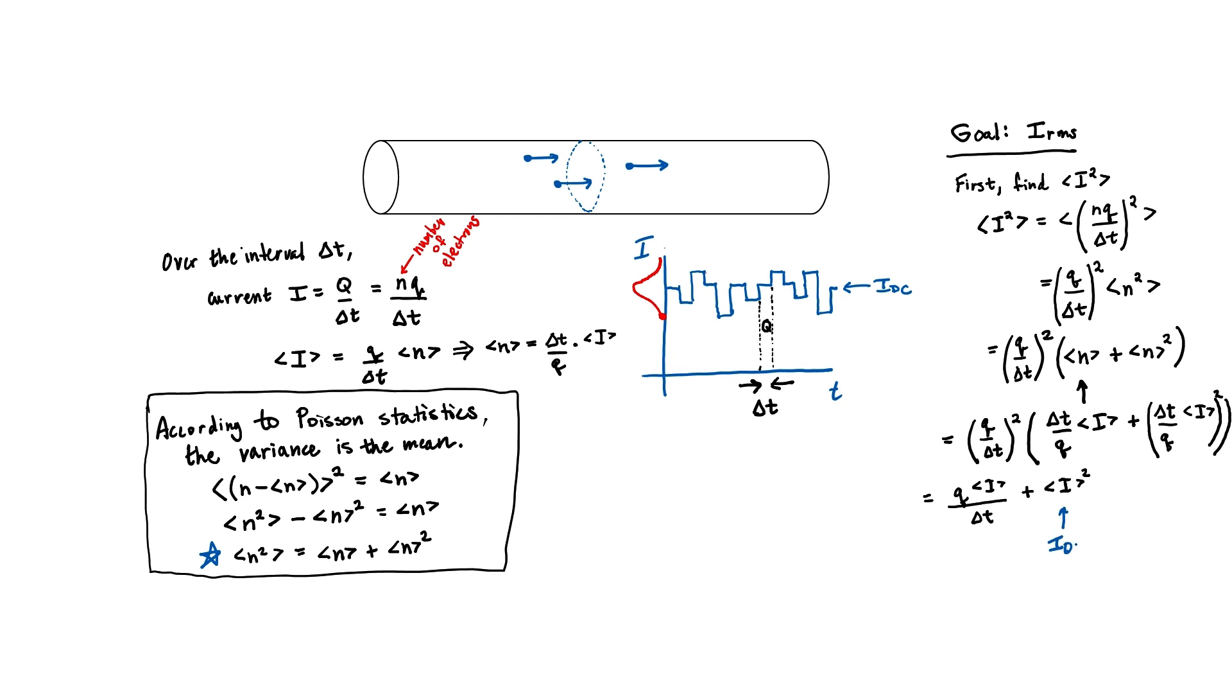The second term is just the square of our DC current, our average current. It's this first term that we're interested. This is the term of the fluctuations. Although this derivation is not completely rigorous, it gives you some idea of the origin of these terms in the equation.